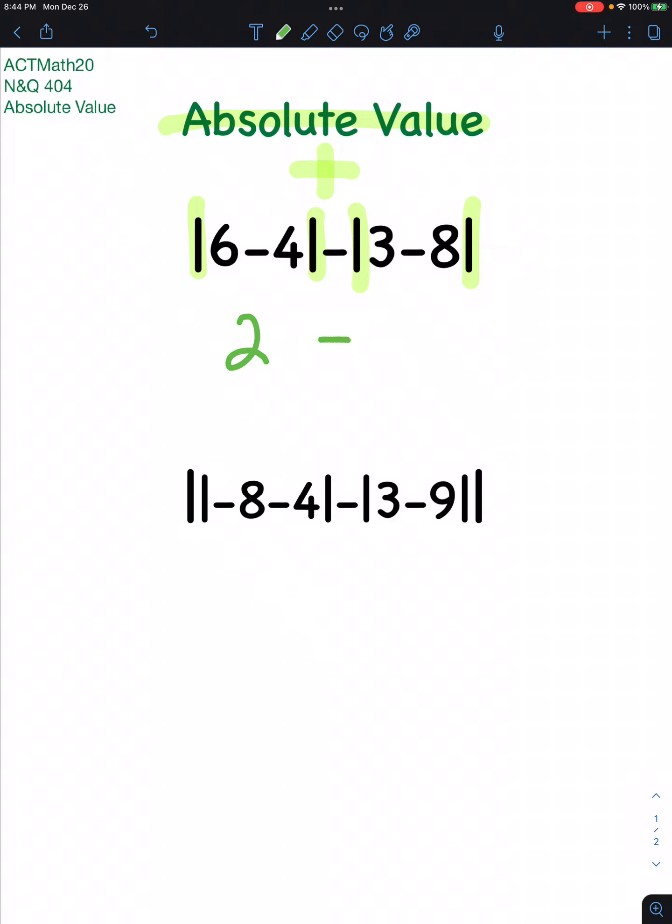3 minus 8 is negative 5, but whatever comes out is positive, so we'll just bring out a positive 5. And 2 minus 5 happens to be a negative 3.